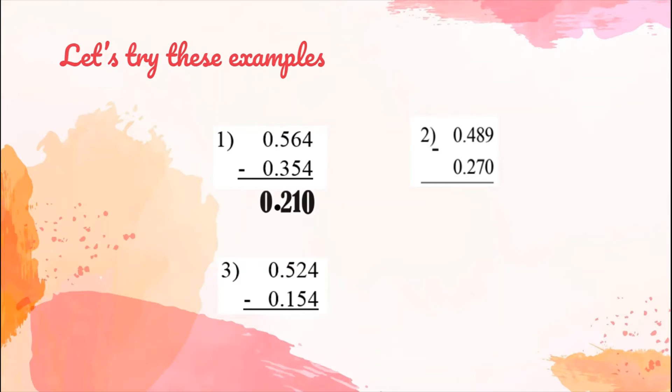Let's go to number 2. We have 0.489 subtracted by 0.270. Let's start with the number on the right part. 9 minus 0, we have 9. 8 minus 7, we have 1. 4 minus 2, we have 2. Align our decimal point. 0 minus 0, the answer is 0. For our final answer, we have 0.219.